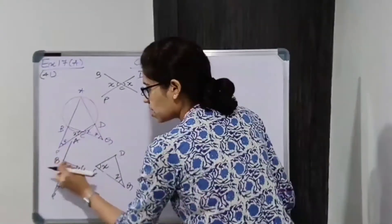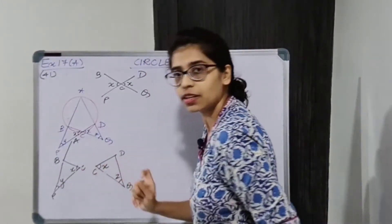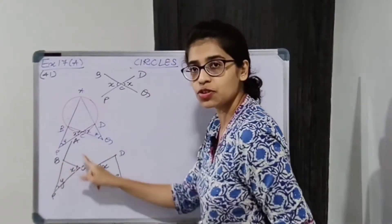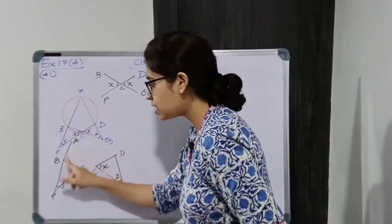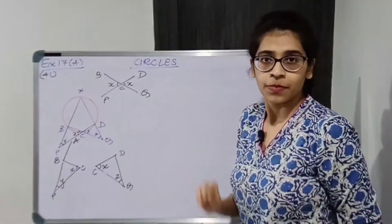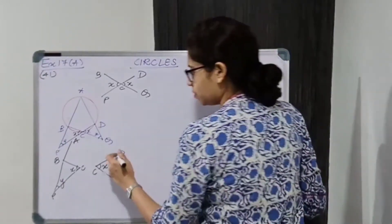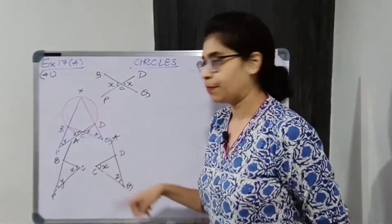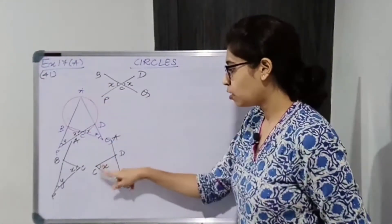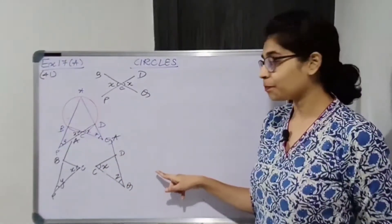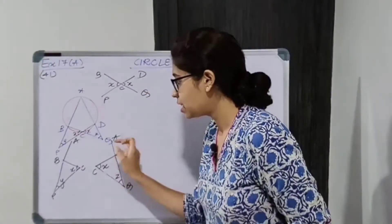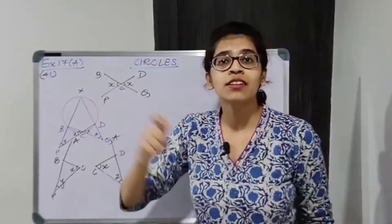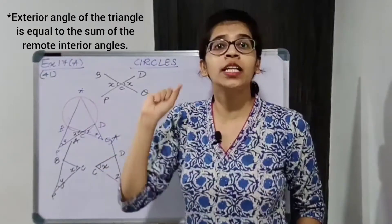The exterior angle of a triangle is equal to the sum of its remote interior angles. An exterior angle is formed by a straight extension — PBA is a straight line and QDA is a straight line. Exterior angle ABC is equal to the sum of its remote interior angles, which gives ABC = x + y.